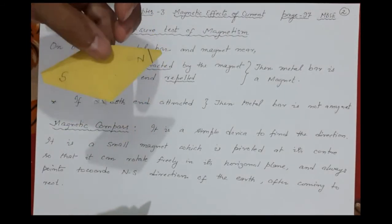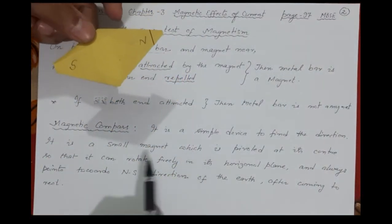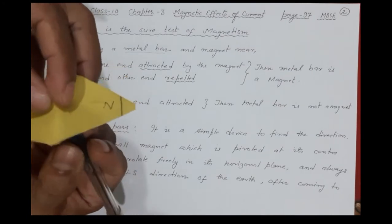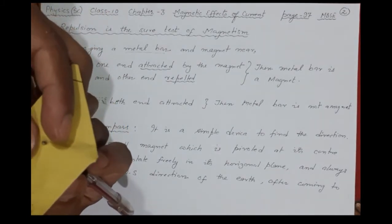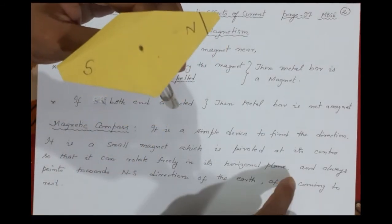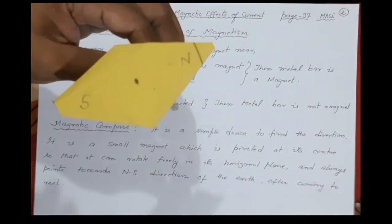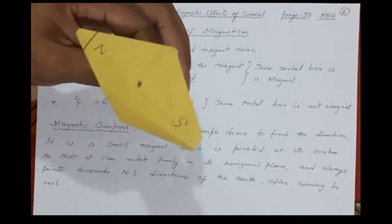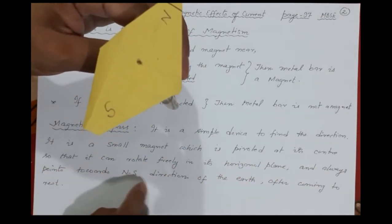The small magnet in a compass is very thin — just like a pin in a watch. It is pivoted at its center, meaning something is fixed at the center so it can rotate freely. This is in the horizontal plane — left-right is horizontal, up-down is vertical. The magnet can rotate freely in this horizontal plane and always points toward the north-south direction.